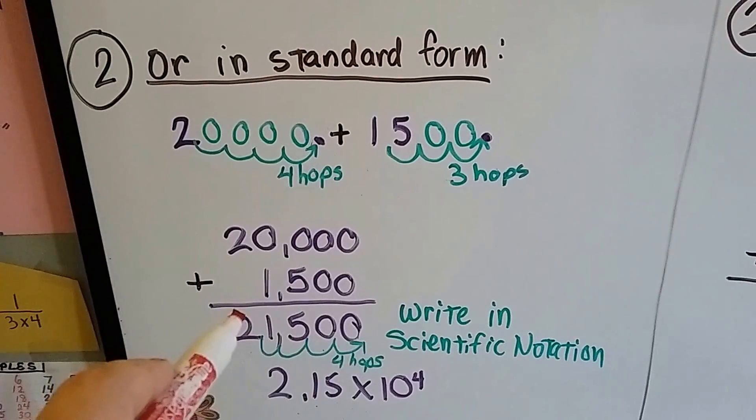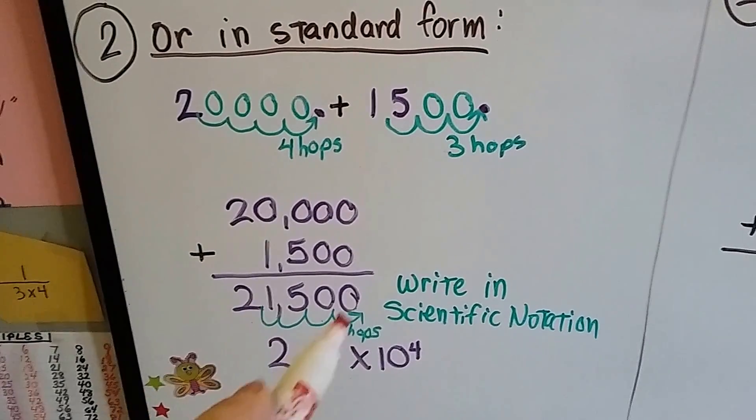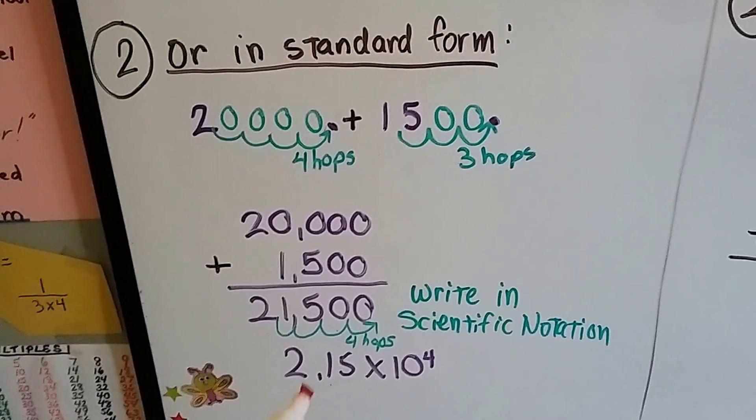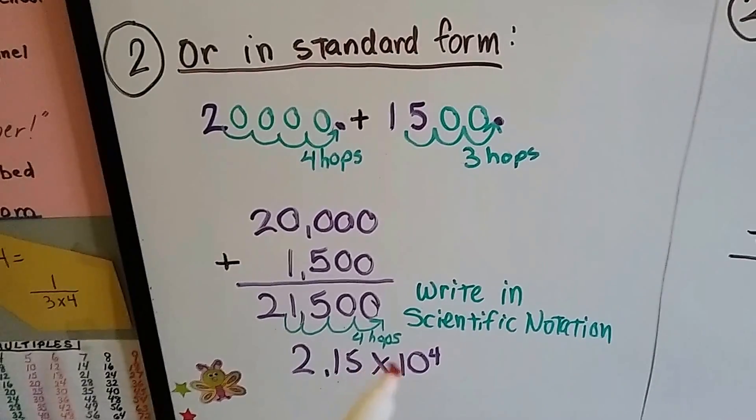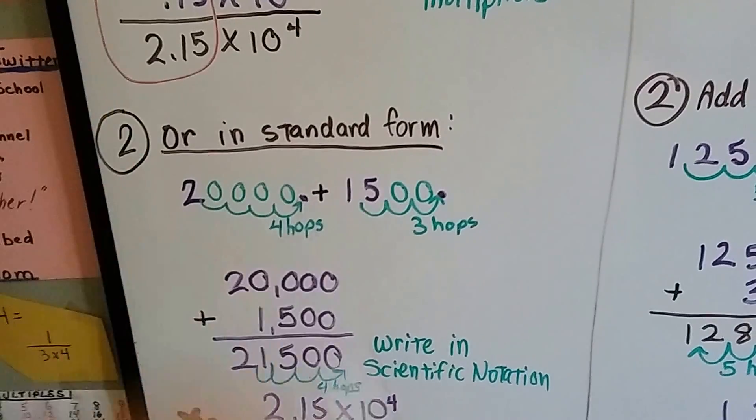Now that I've done this addition, I write it back into scientific notation. And I go from here, 1, 2, 3, 4 hops. So I've got 2.15 times 10 to the 4th, just like I did here. 2.15 times 10 to the 4th.